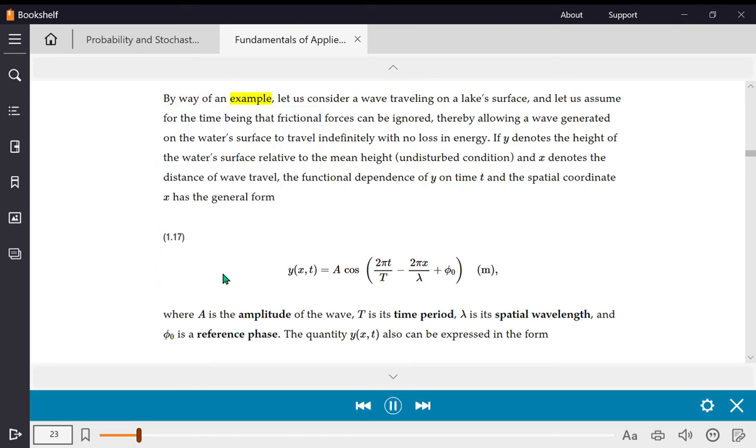By way of an example, let us consider a wave traveling on a lake surface, and let us assume for the time being that frictional forces can be ignored, thereby allowing a wave generated on the water's surface to travel indefinitely with no loss in energy. If Y denotes the height of the water's surface relative to the mean height, undisturbed condition, and X denotes the distance of wave travel, the functional dependence of Y on time T and the spatial coordinate X has the general form.